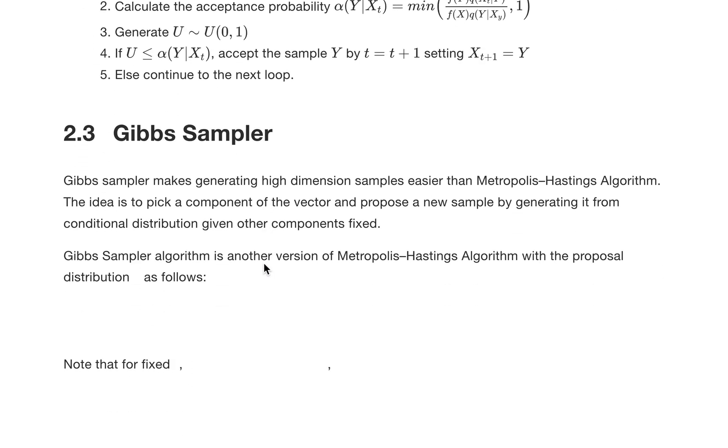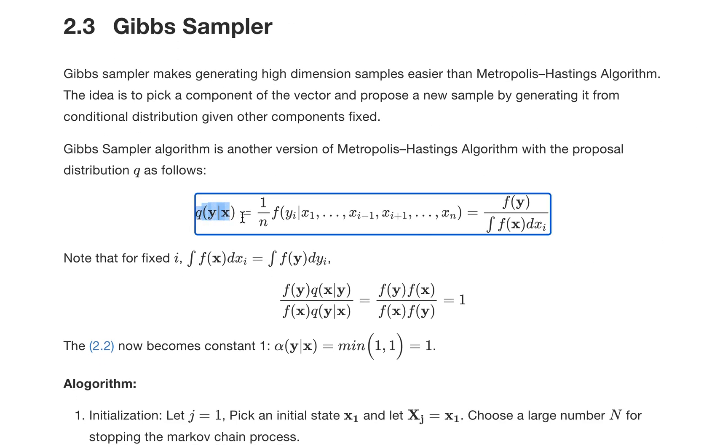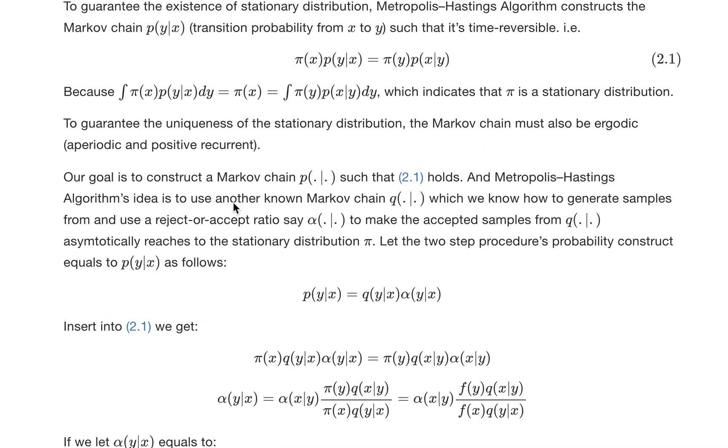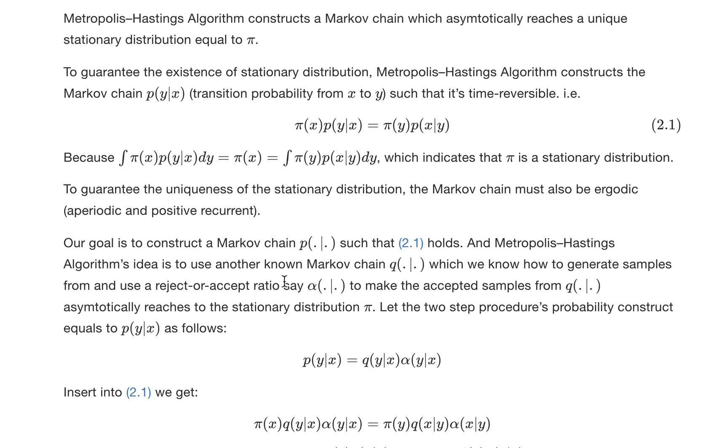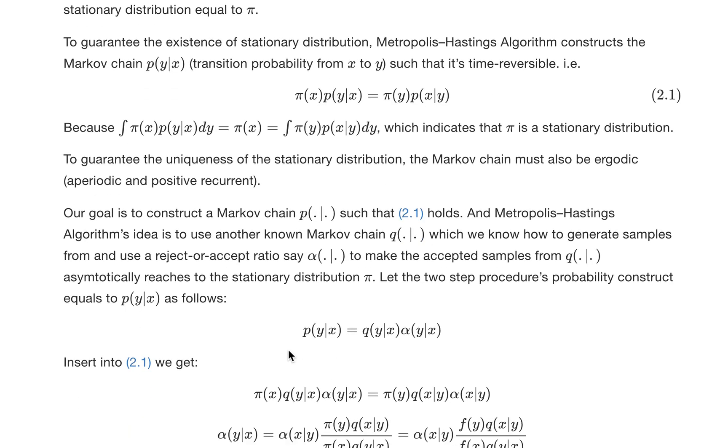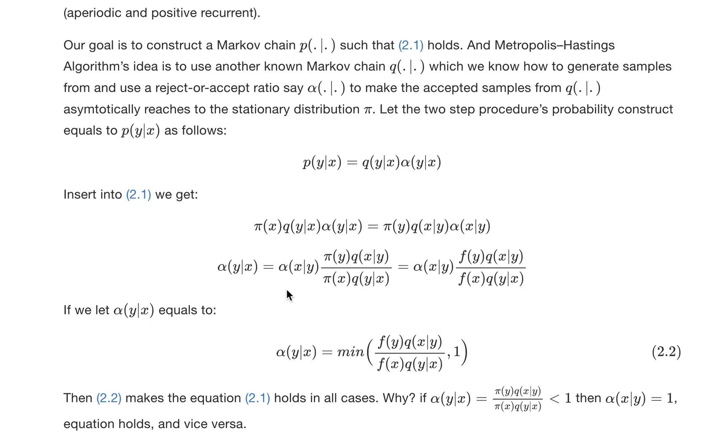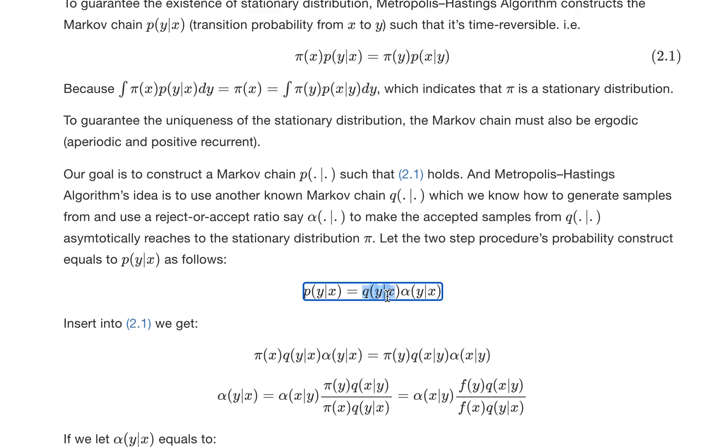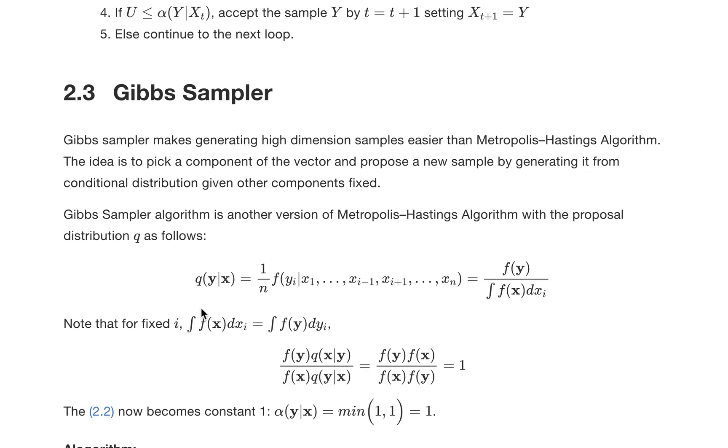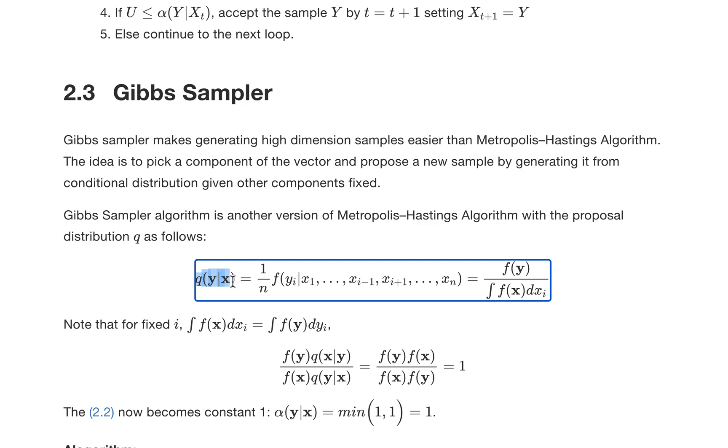In Gibbs Sampler, the proposal transition probability q in the Metropolis-Hastings algorithm—in Gibbs Sampler this proposal transition probability is actually two steps. First we pick one of the components in that n-dimension, which is one over n.